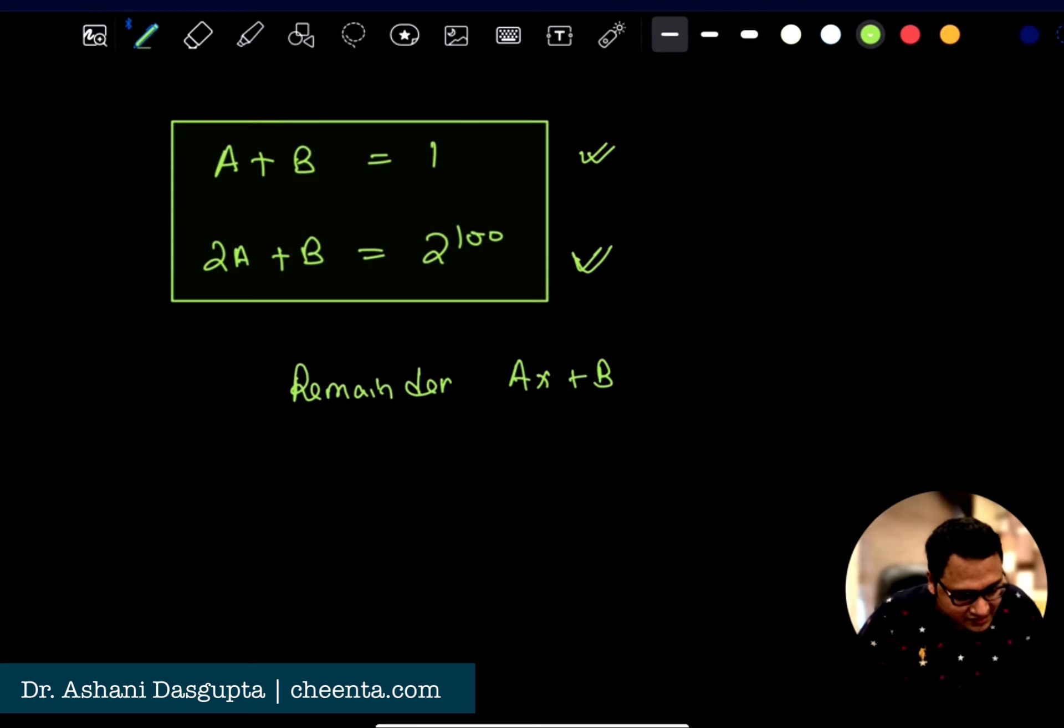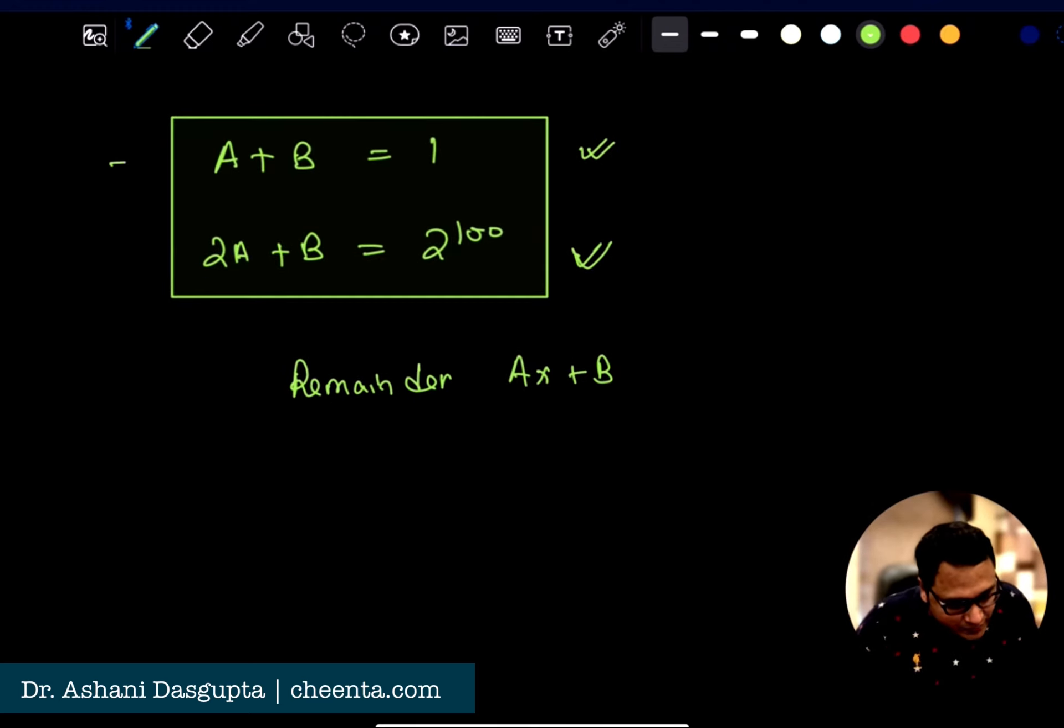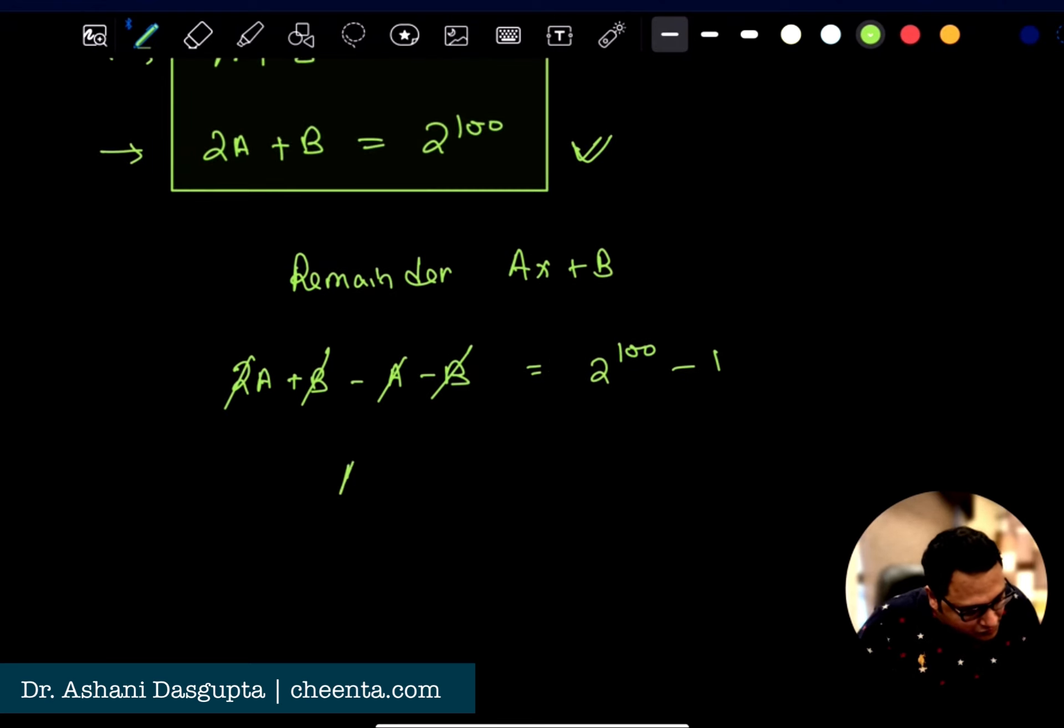I will do the first step. I will just subtract the first equation from the second equation. So I get 2a plus b minus a minus b equals 2 to the power 100 minus 1. So I get a equals 2 to the power 100 minus 1. Can you find b using this particular process? Just replace the value of a in one of the equations and you will get b. Try to find it out and tell me in the comment section.